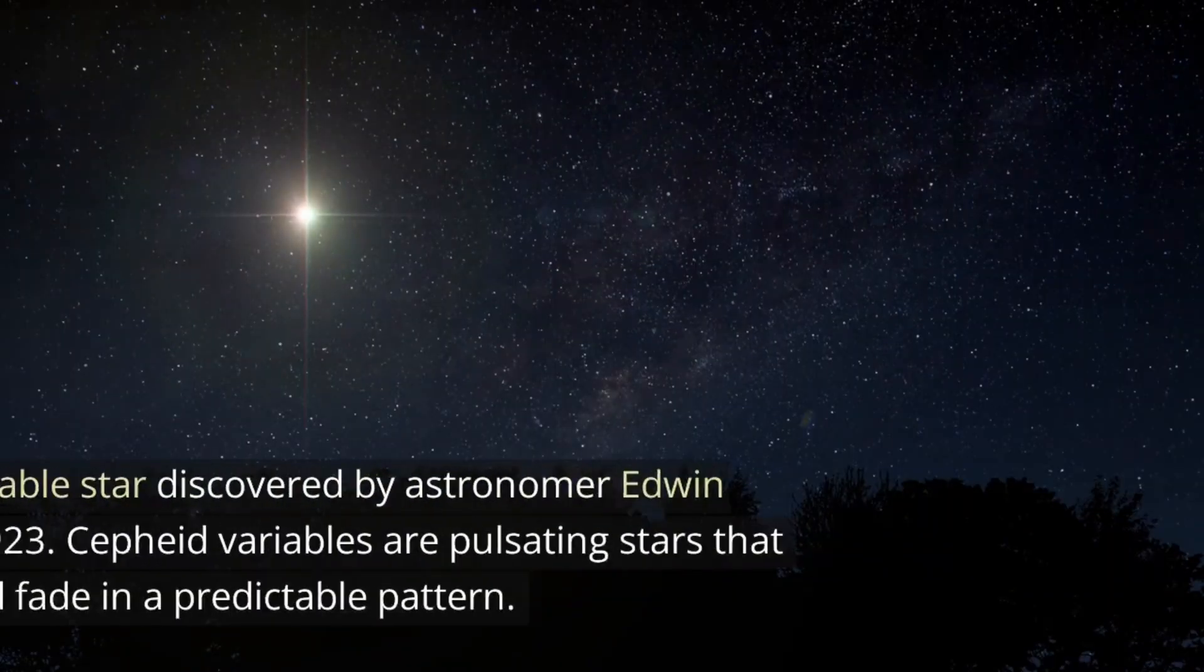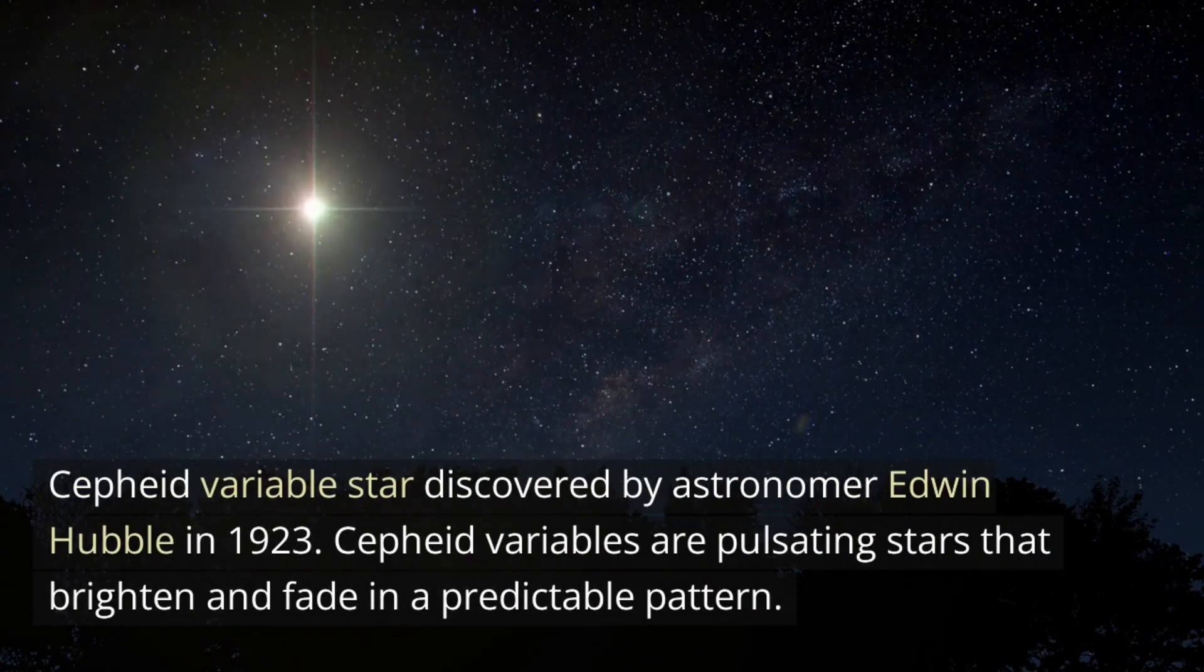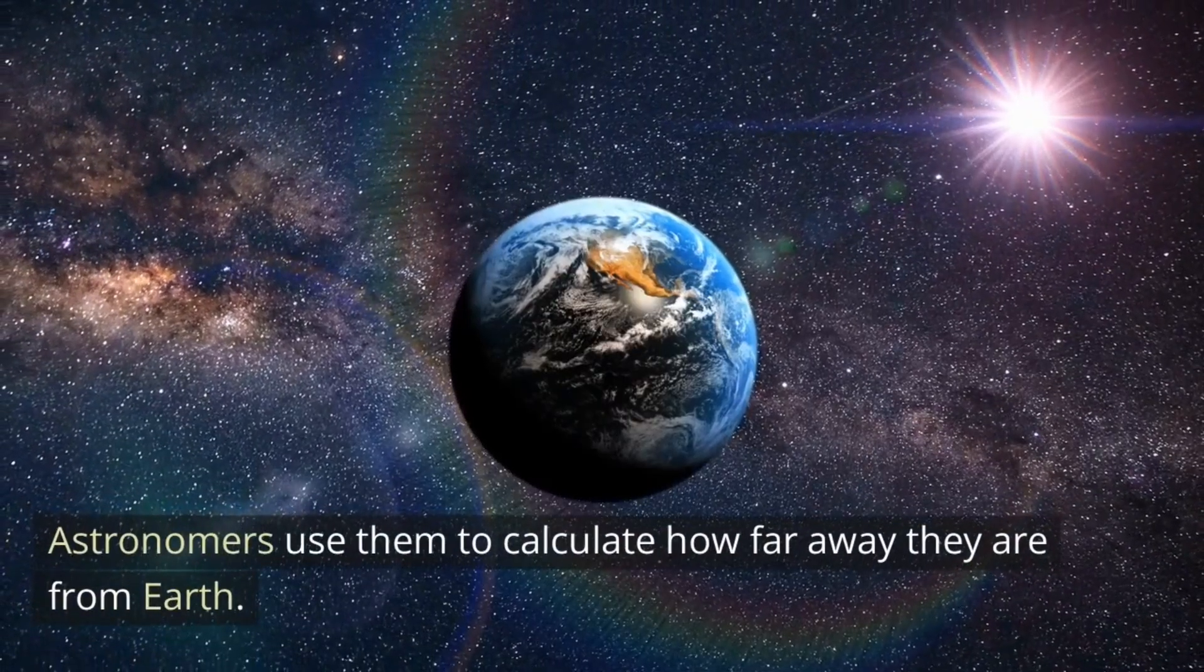Cepheid variable star discovered by astronomer Edwin Hubble in 1923. Cepheid variables are pulsating stars that brighten and fade in a predictable pattern. Astronomers use them to calculate how far away they are from Earth.